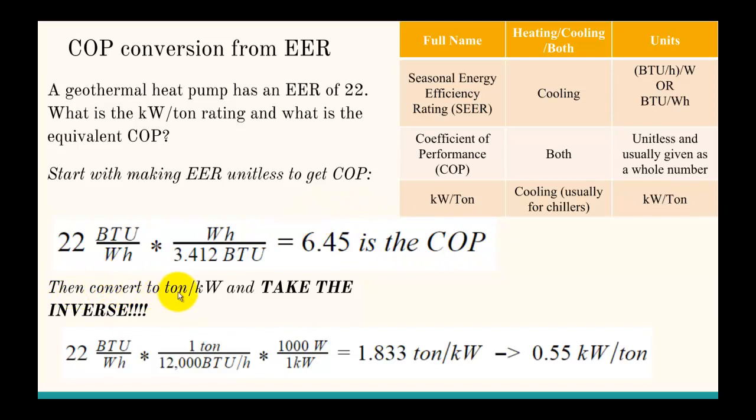Then we need to convert to tons per kilowatt, and then take the inverse. Because remember, the weird part about kilowatts per ton is that it's not output over input, it's input over output. So we have the 22 BTUs per watt hour, and then we take the ton unit conversion, which is 12,000 BTUs per hour, then we take the watts to kilowatts, and we get 1.833 tons per kilowatt.